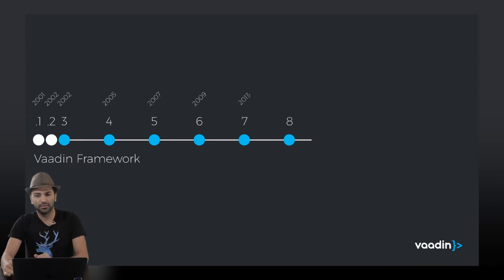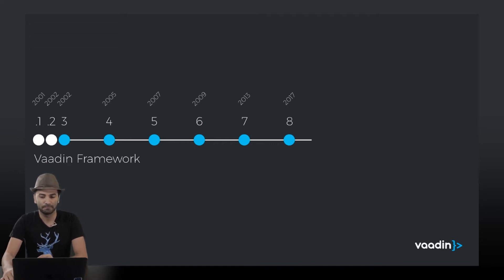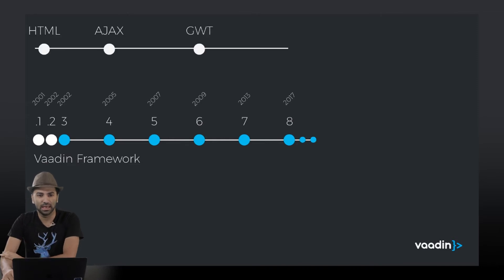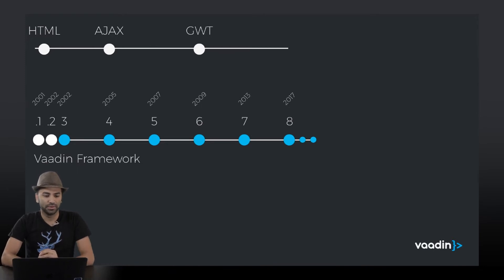And if you are following the news, you are probably aware that VADEN framework version 8 has been released early 2017. The biggest changes that we can see across those milestones is that we started to have, for example, AJAX on 2005, like the framework version 5.